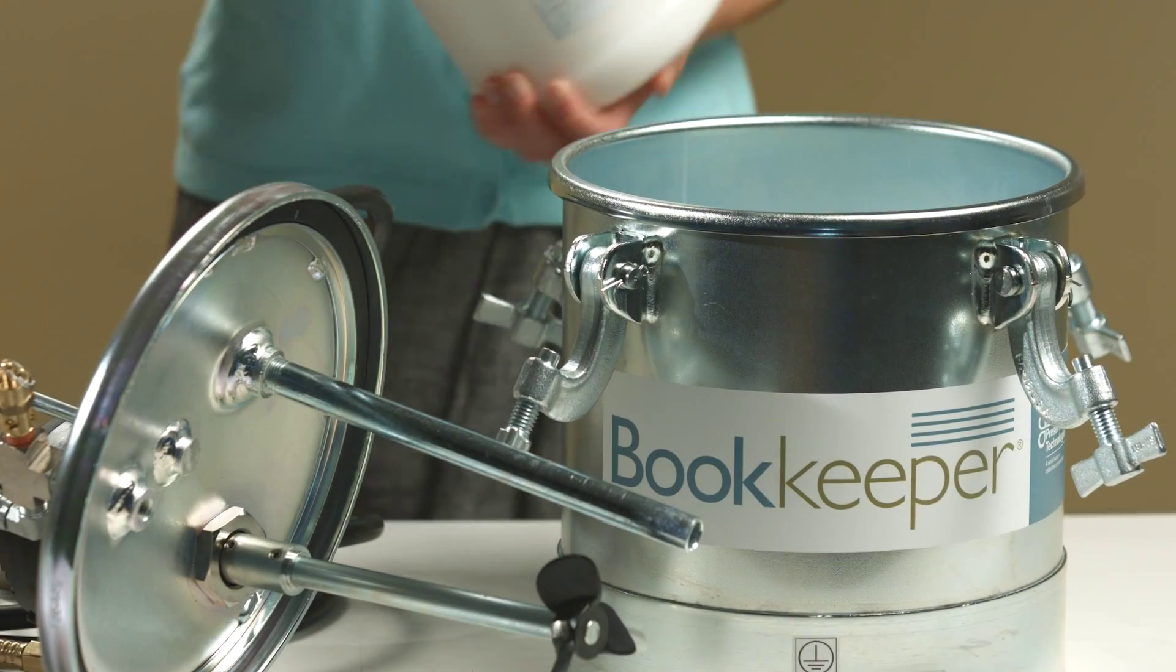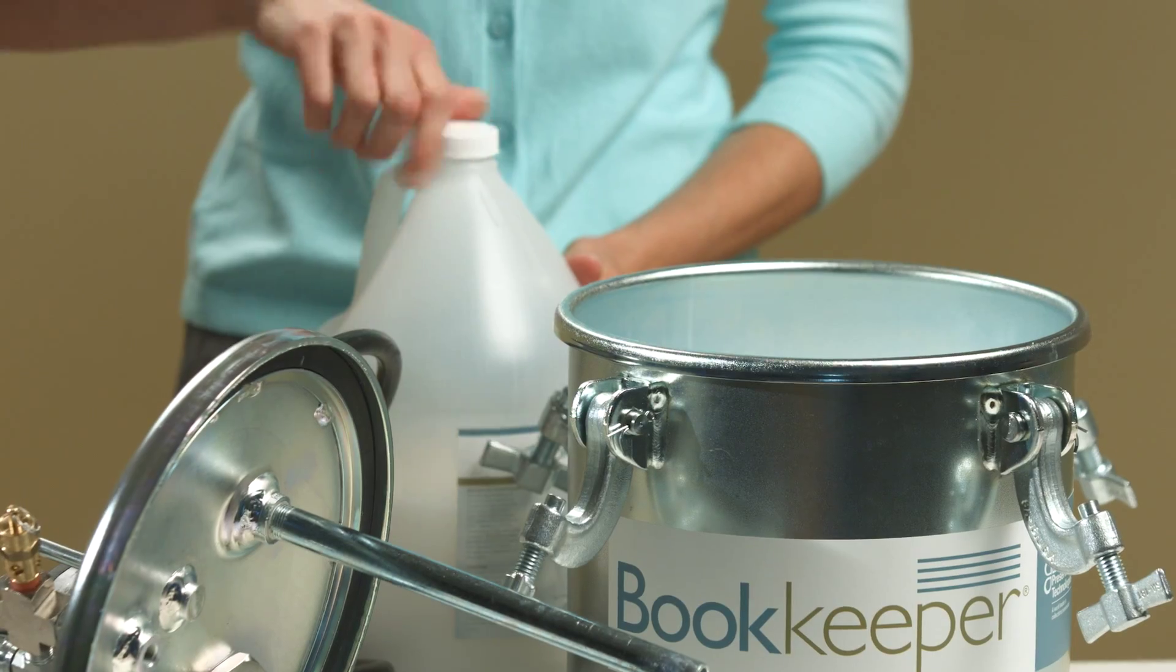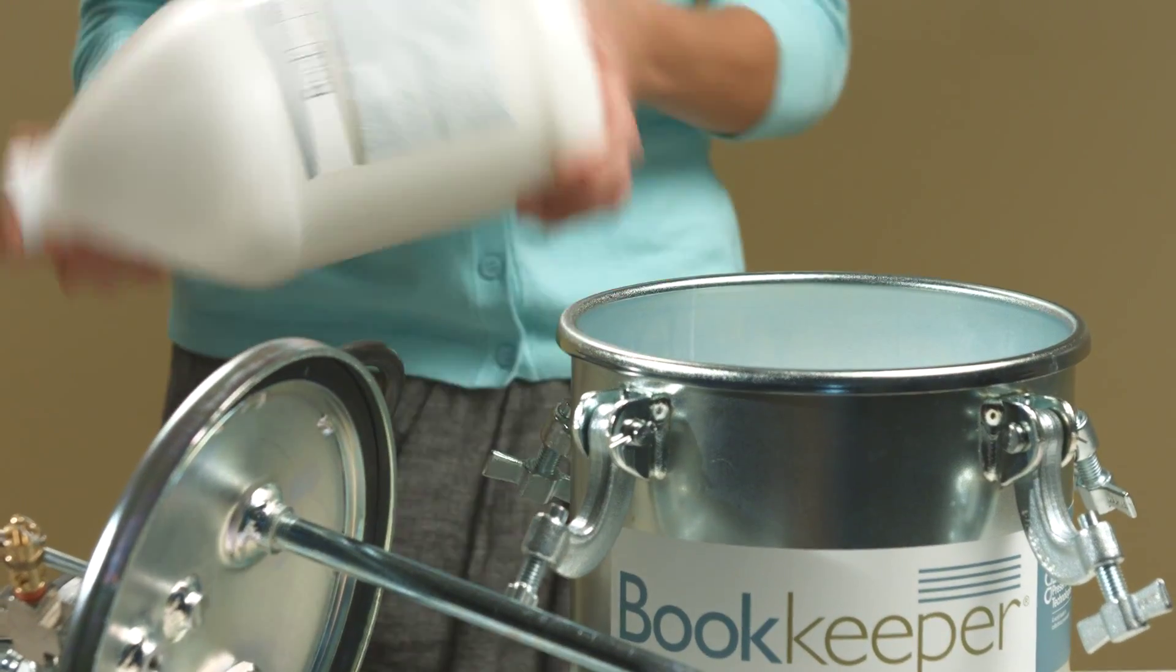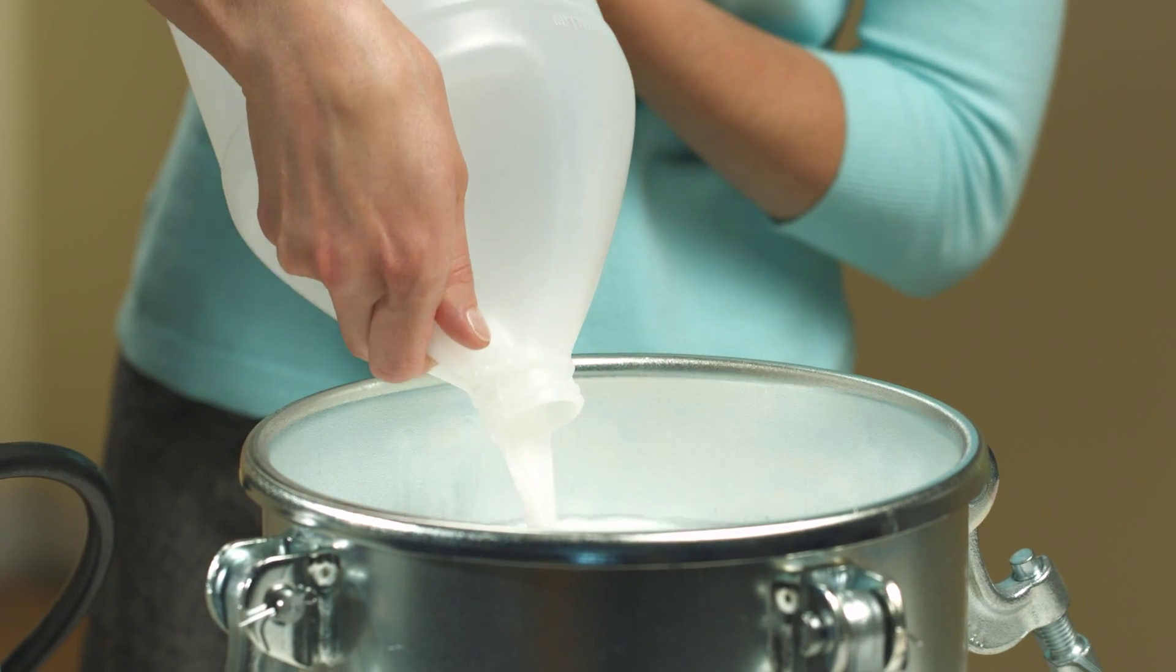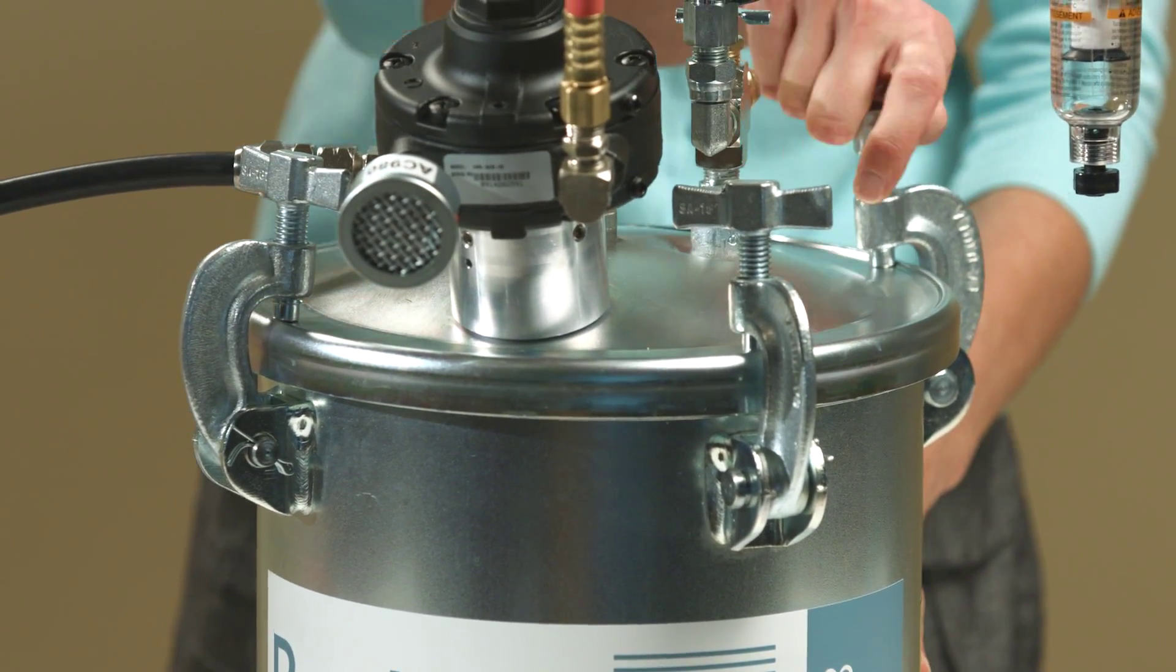Shake the bookkeeper dispersion well to ensure no solids remain in the bottle. Pour half the contents of the bottle into the spray tank, then shake again. Pour the remaining liquid into the tank. Replace the lid and evenly fasten the clamps in an X formation.